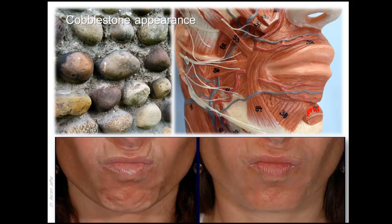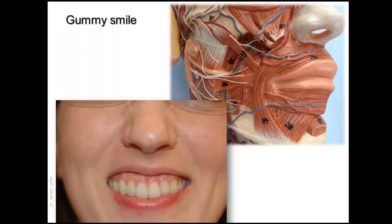The gummy smile is an excessive display of gingival tissue on smiling, with skeletal, gingival, and muscular etiologic factors. Botox injections are only suitable when the cause is muscular — specifically hyperactive lip elevator muscles, including levator labii superioris, levator labii superioris alaeque nasi, zygomaticus minor, and zygomaticus major. In this case, the injection is given along the nasolabial folds to include these muscles.